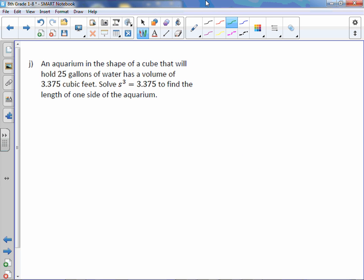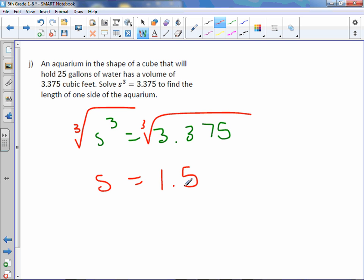An aquarium in the shape of a cube that will hold 25 gallons of water has a volume of 3.375 cubic feet. Solve s cubed equals 3.375 to find the length of one side of the aquarium. So s cubed equals 3.375. To get rid of a cube, we cube root both sides to get our s isolated. Type it in your calculator. Cube root of 3.375. And we get 1.5. Again, our unit is feet. So 1.5 feet is the length of the side of the aquarium.